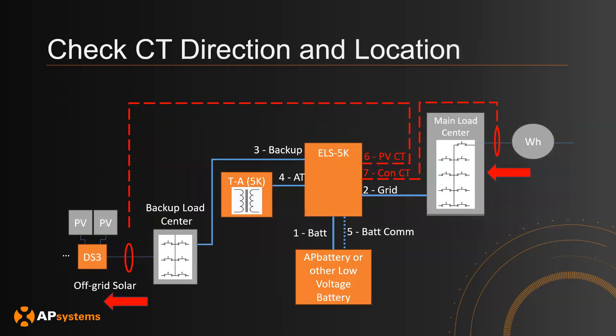Another common issue is the direction and location of the CTs. On the PCS side, make sure the CTs are connected to the correct connectors. On the AC wiring side, make sure the PV CT is connected to all solar coming into the system, with the arrow pointing from the PCS towards the PVs. For the consumption CTs, connect them between the main load center and the utility meter, with arrows pointing from the utility meter towards the main load center.